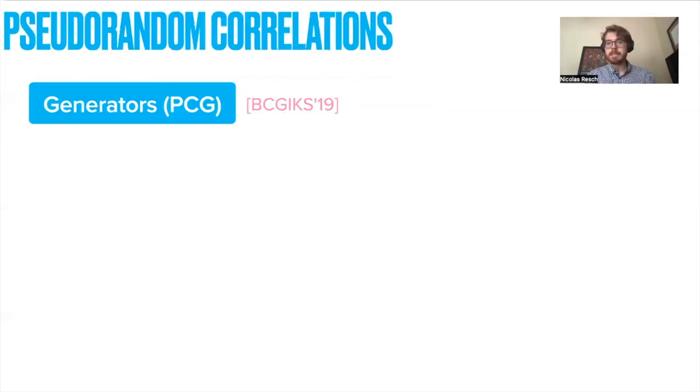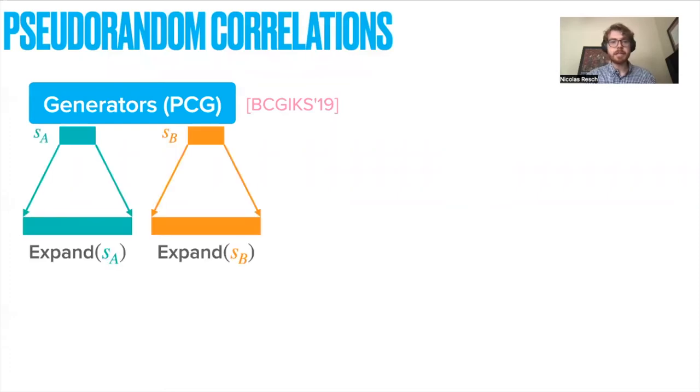It was suggested to construct what are called pseudo-random correlation generators, where basically the idea is that Alice and Bob could use some sort of protocol to share very short seeds SA and SB, and then silently, with no more communication, they can expand them into longer strings, and these longer strings then will have many instances of the required correlations that they can then use when running their MPC protocol.